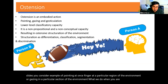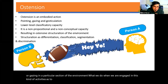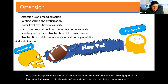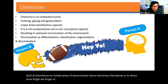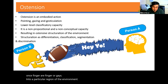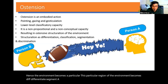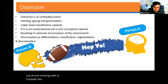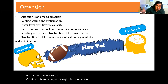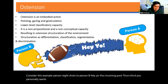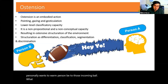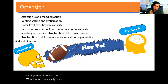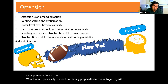Consider the example of pointing one's finger at a particular region of the environment or gazing in a particular section of the environment. What we do when engaged in this kind of activity is to initiate a series of sensory-motor machinery that allows us to direct our finger or gaze into a particular region of the environment. Hence, this particular region becomes a differentiated structural segment that is ready for us to do all sorts of things with. Consider this example: person A shouts to person B, 'Hey, there's an incoming ball towards you.' Person A wants to warn person B about the incoming ball.